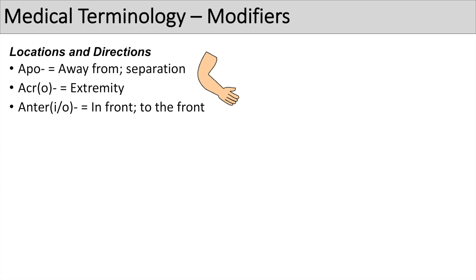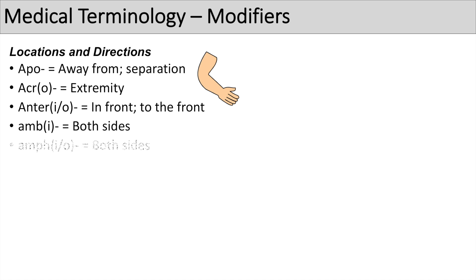The next prefix is 'anter' or 'anterio', which simply means in front or to the front — you can think of the word anterior. The next one is 'amb' or 'ambi', which means both sides, like ambidextrous, meaning you're using both hands. The next one is 'amphi' or 'amphio', which also means both or both sides — you can think of amphibian or amphiphilic.